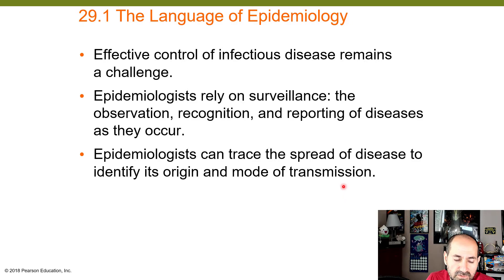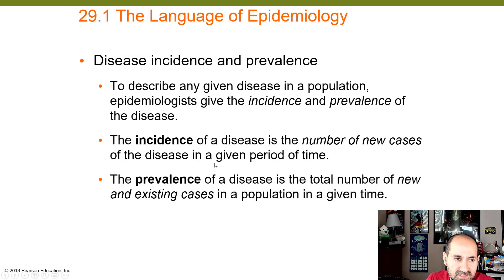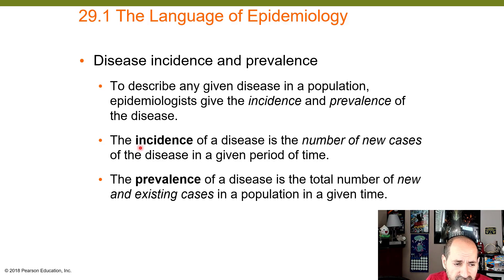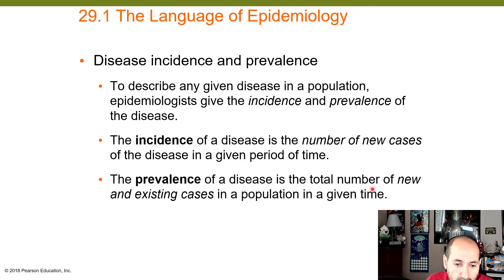If you don't understand the mode of transmission, it's also impossible to break that link. There is a difference between the incidence and the prevalence of a disease. The incidence of a disease is the number of new cases in a given population in a given period of time, whereas the prevalence is the total number of new and existing cases in a population in a given time.